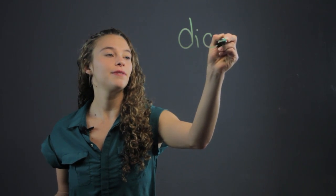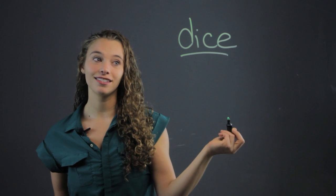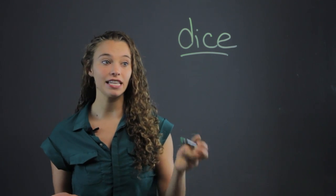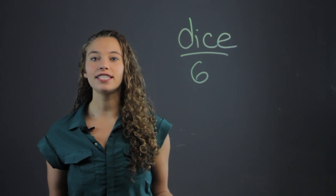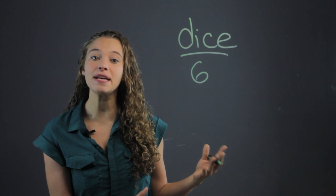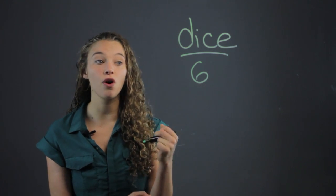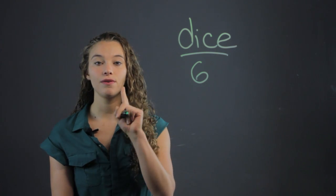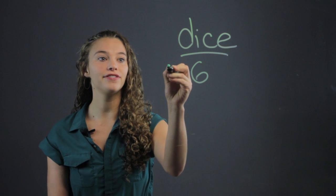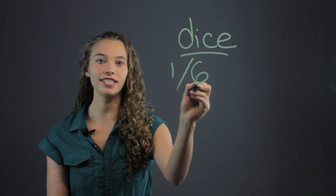A great example that we use when we're doing basic problems is dice. Dice, there's six possibilities, right? So you can say, what's the probability that you will roll a two? Well, that's one option out of six, right? So that's one over six.